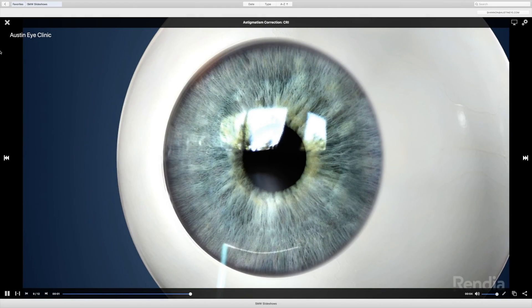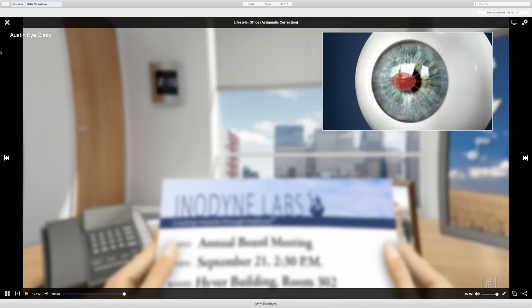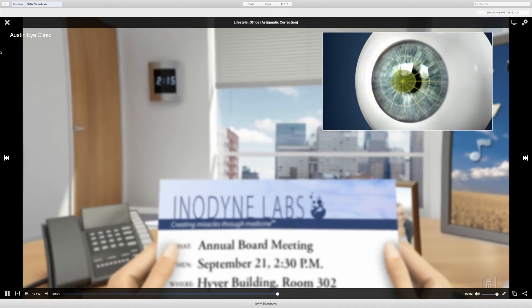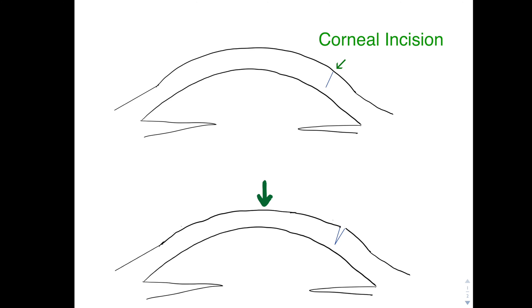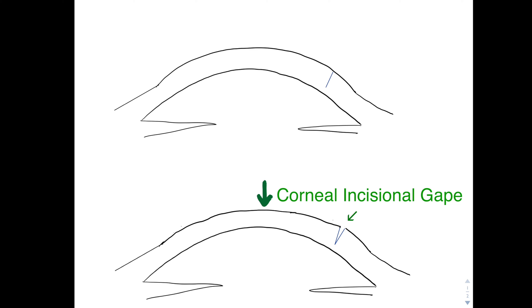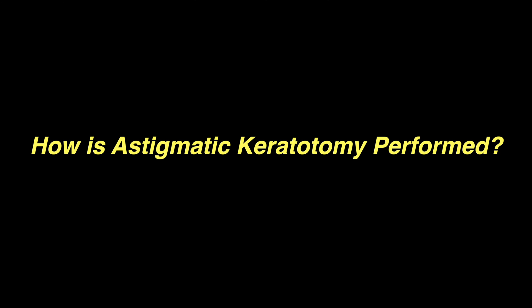So how does AK work? The astigmatic incision is placed on the steeper axis of corneal curvature, and it will cause a microscopic incisional gape, which will cause corneal flattening in that axis, thus reducing the astigmatism. How is astigmatic keratotomy performed?